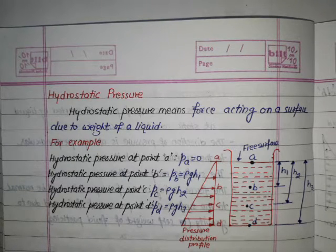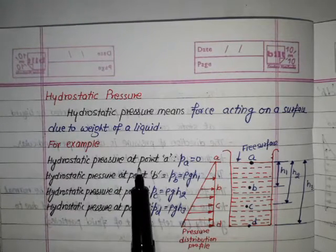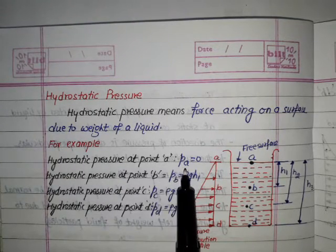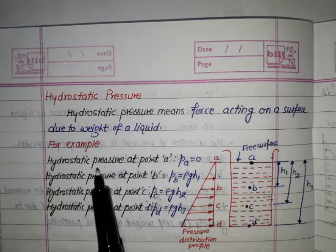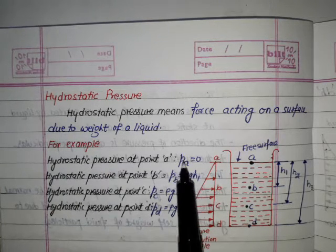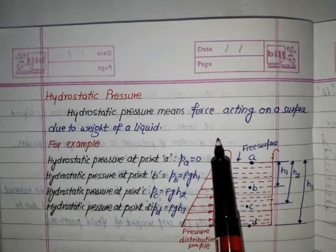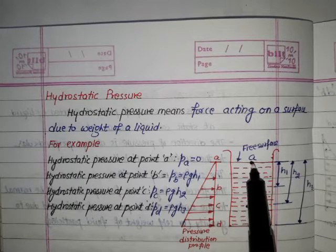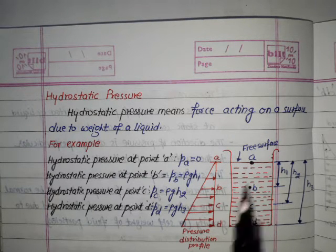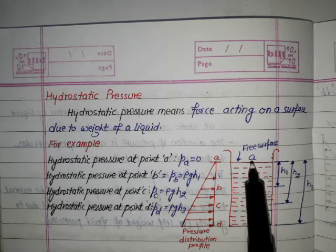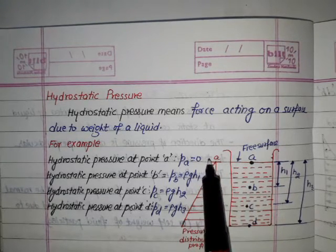For example, hydrostatic pressure at point A: Pa = ρgh. At point A, depth is zero because this is the free surface level, so h = 0. Therefore, ρg × 0 = 0, and the hydrostatic pressure at point A is zero.